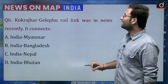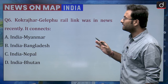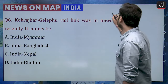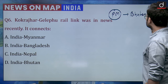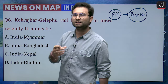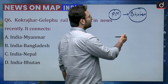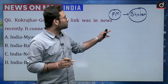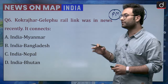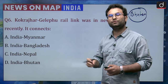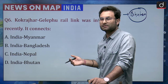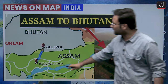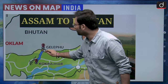Question number 6: the Kokra Jhaar–Galapu rail link was recently in news. It connects India with which country: Myanmar, Bangladesh, Nepal, or Bhutan? Our Prime Minister Modi recently visited Bhutan during the election period and was awarded the highest order of that country. During that visit, they also discussed this Kokra Jhaar–Galapu rail link. Kokra Jhaar is in Assam, and this rail link will connect Assam to Bhutan. So option D, India-Bhutan, is the right answer.